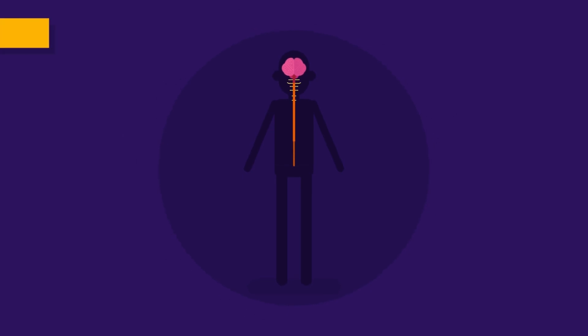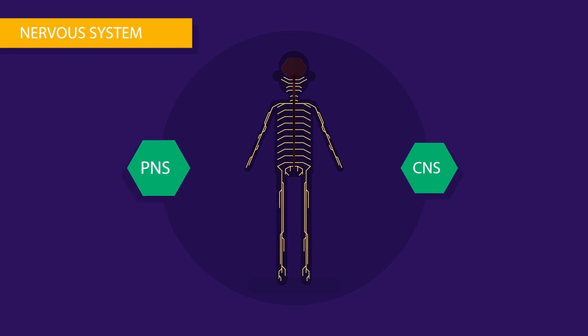Brain comes under a system called nervous system. Structurally, nervous system is classified into two types. Central nervous system, CNS, and peripheral nervous system, PNS.